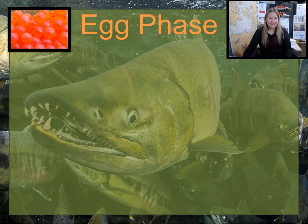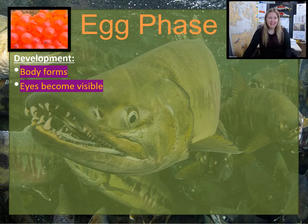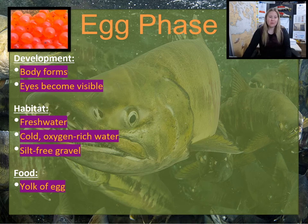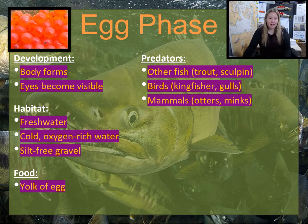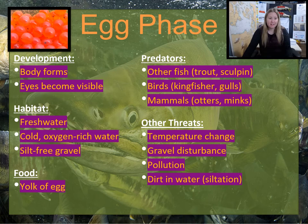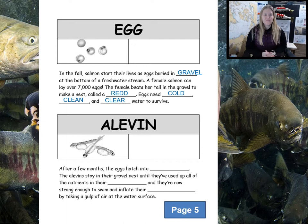As an egg, salmon are forming their bodies and their eyes become visible like two black dots on the egg. They live in fresh water and need it to be cold and oxygen rich. The gravel must be free of silt so the eggs don't suffocate, and the only food they need is the yolk of their egg. They face predators including fish like trout, birds like kingfishers, and mammals like otters. Other threats include temperature change, gravel disturbances from floods, pollution from toxic chemicals, and dirt in the water that can clog their ability to breathe. They'll be eggs for about 60 days.